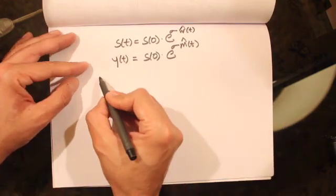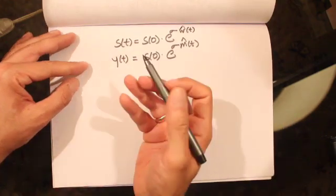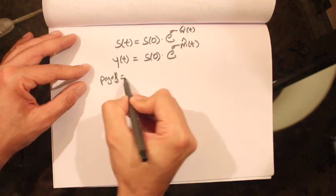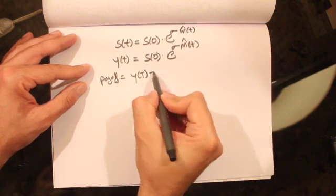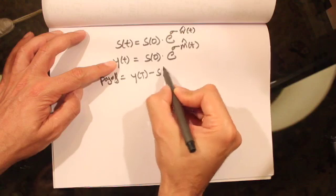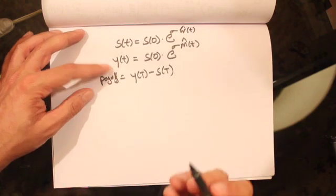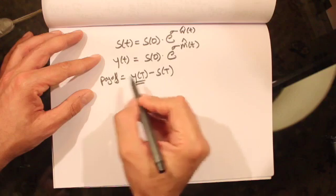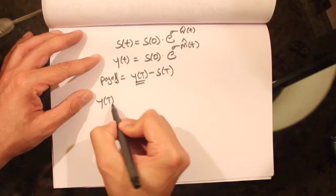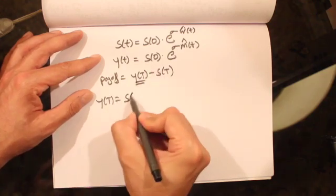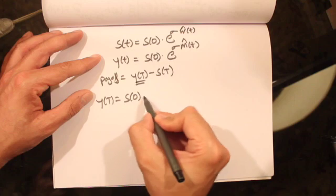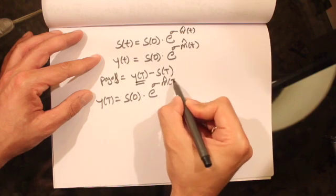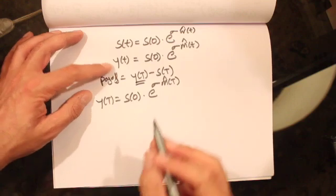We also know what the payoff of a lookback option is. The payoff is given by y(T) minus S(t). Now y(T) can be written as S0 times e to the power of sigma m̂(T).